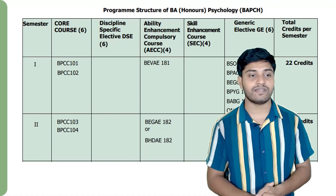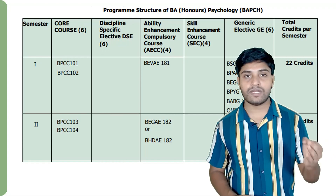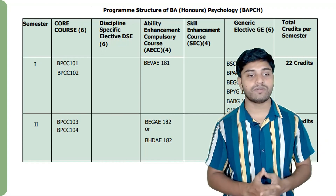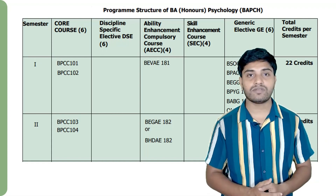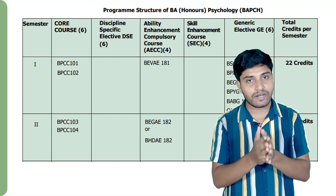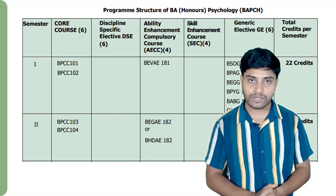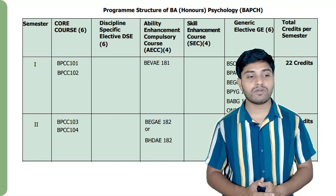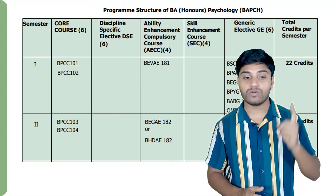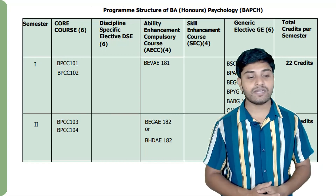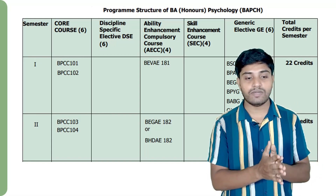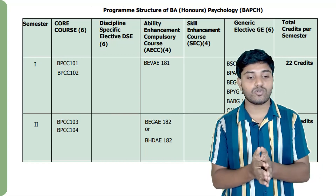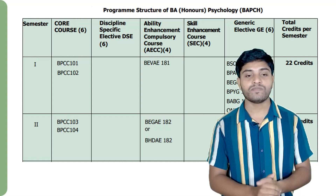There are two core courses — two papers in first semester and two in second semester. For discipline specific electives, there are papers in that year. In the ability enhancement compulsory courses, there is 1st year. In the second year, we will choose BEGAE 182 or BHDAE 182.